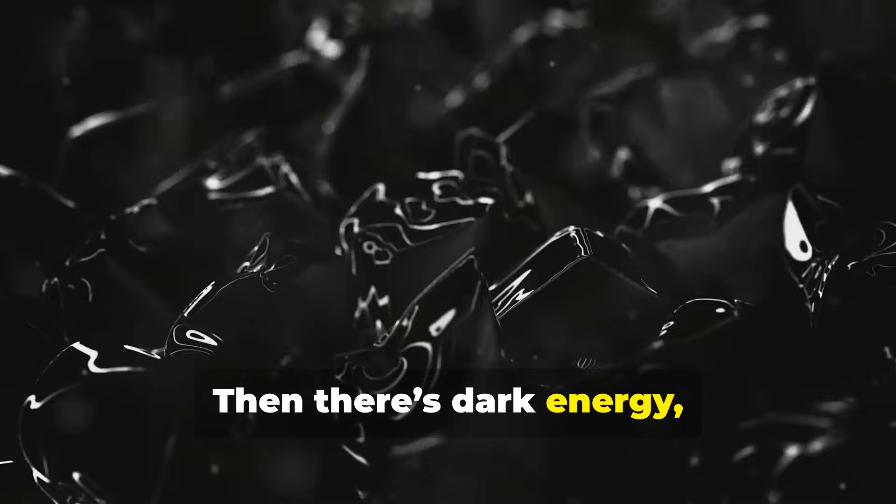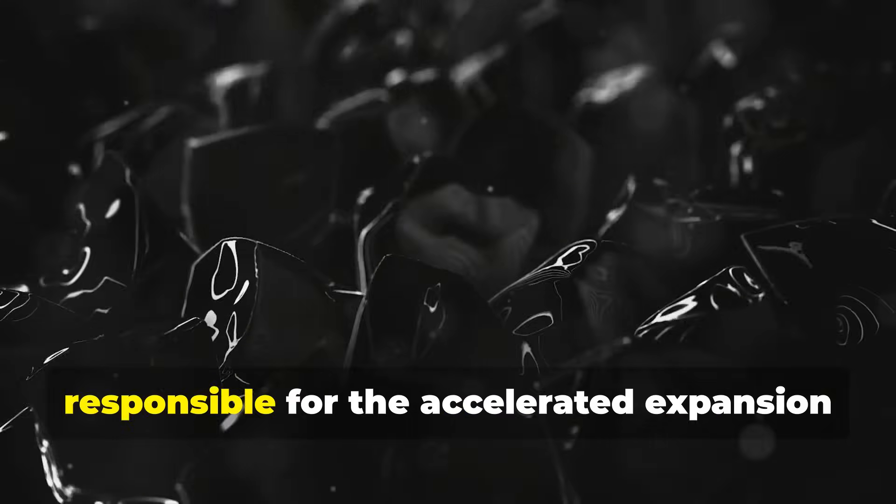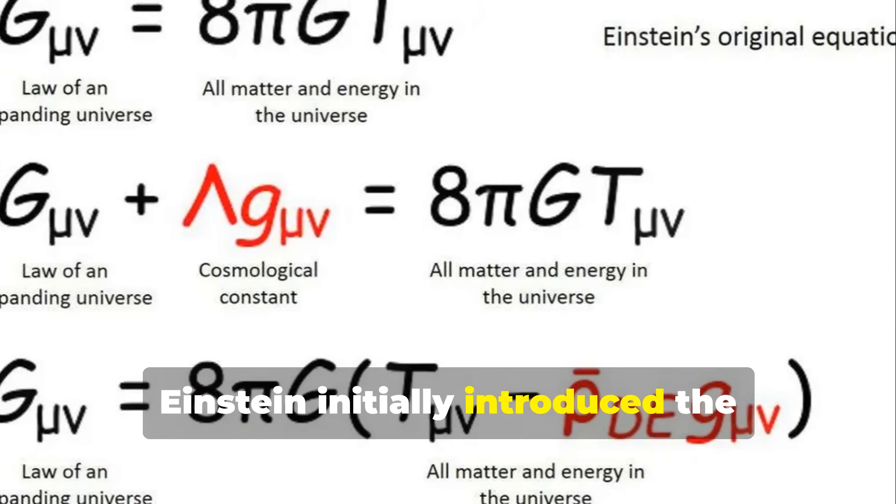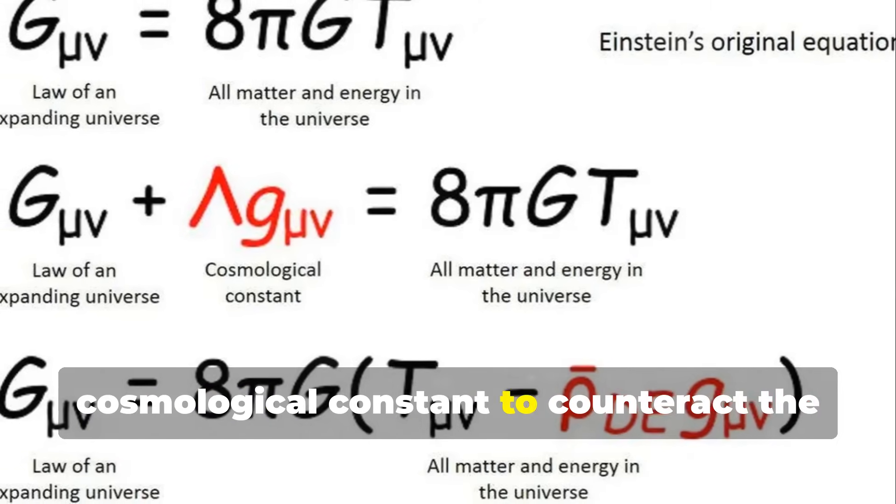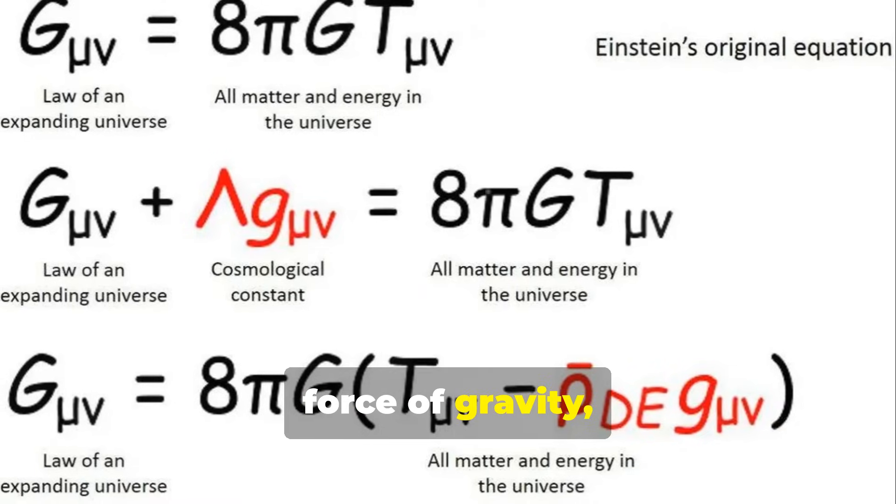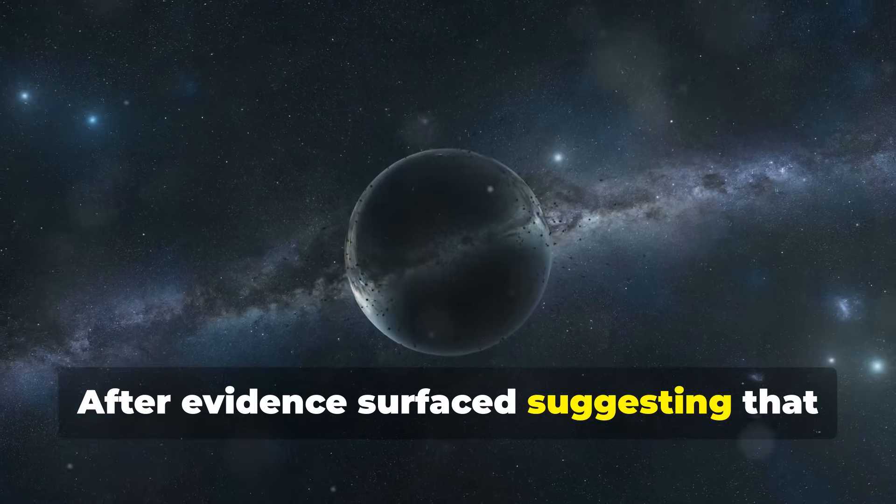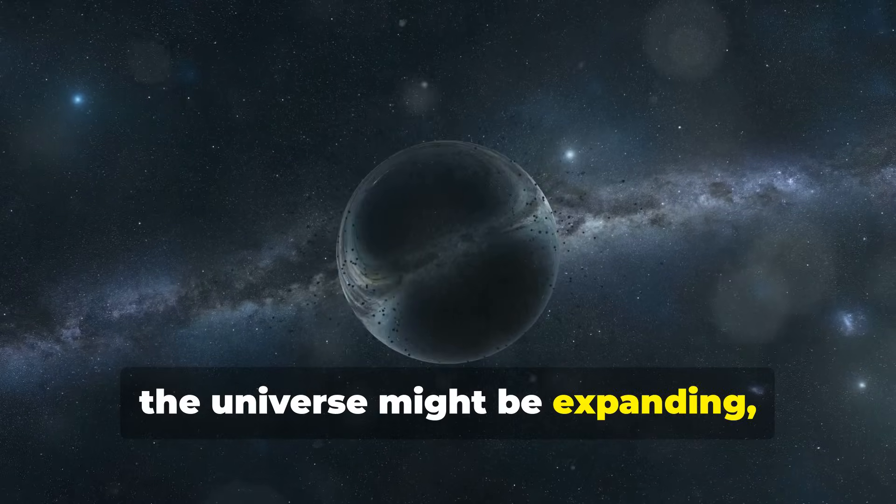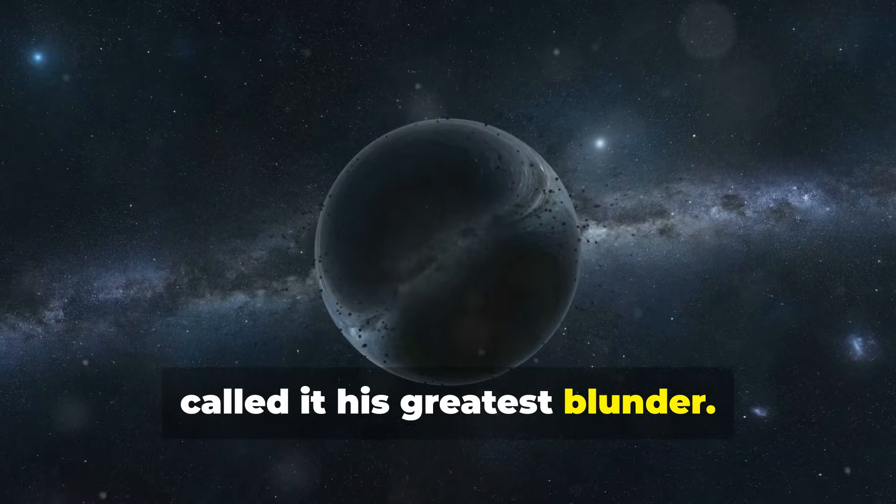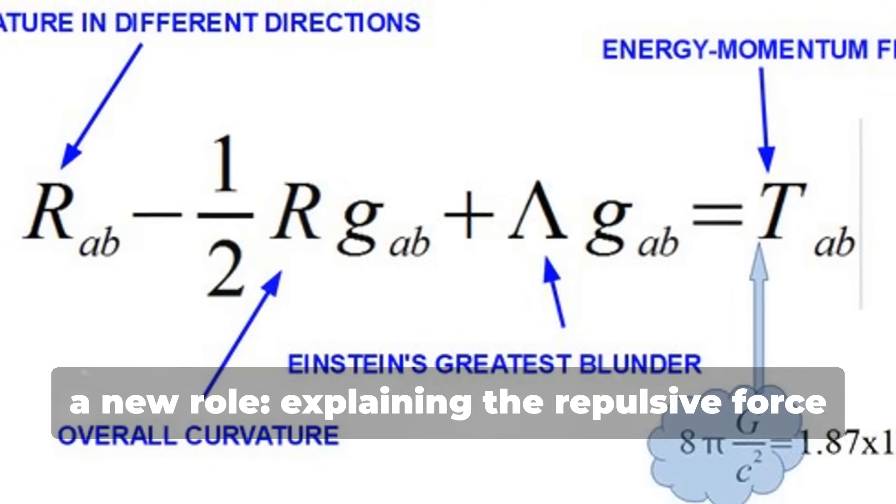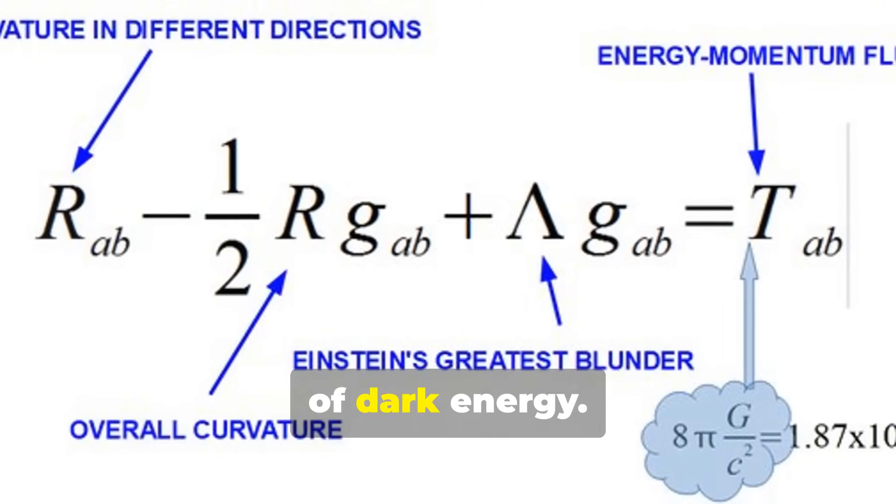Then there's dark energy, making up roughly 68% of the universe, responsible for the accelerated expansion of the cosmos. Einstein initially introduced the cosmological constant to counteract the force of gravity, to achieve a static universe. After evidence surfaced, suggesting that the universe might be expanding, he abandoned the constant and famously called it his greatest blunder. However, the cosmological constant resurfaced with a new role, explaining the repulsive force of dark energy.